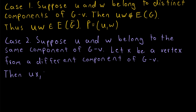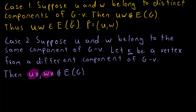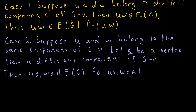Then since X is in a different component of G minus V from U and W, we can use the same reasoning from case one: UX cannot be an edge of G and WX cannot be an edge of G. If either of these edges existed in G, X would be in the same component as U and W after deleting V. So by definition of complement graph, UX and WX must be edges of G complement.